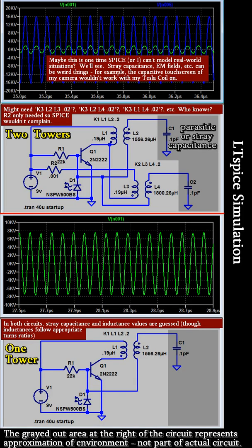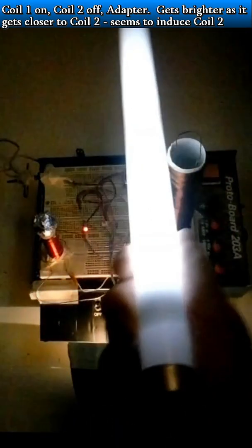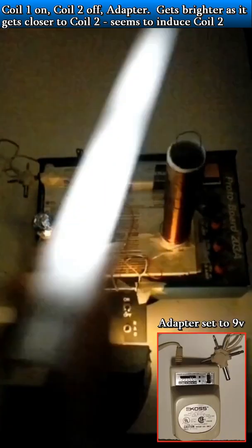The Spice Circuit Simulator indicates that the stronger tower would get stronger, while the weaker one would get weaker. I don't know if the magnetic field of one tower would induce current in the other.